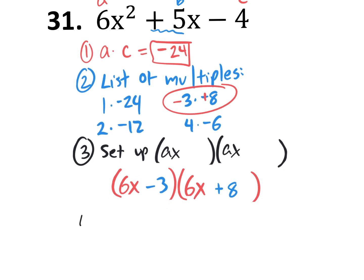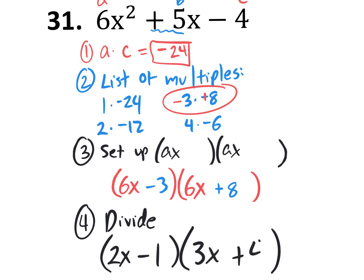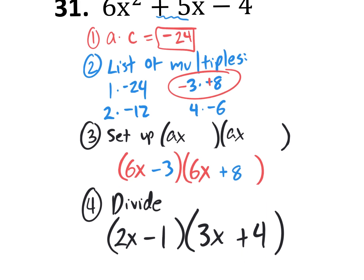So you put that minus 3 right there and the plus 8 right there. So that's our third step of the 4. And the fourth step is to simply divide. Divide by what? By whatever you can. The greatest value, that is. So when you look at this first parenthesis, the 6 and the 3, they're both divisible by 3. 6 divided by 3 is 2, and of course it has an X. 3 divided by 3 is 1. So it's a 2X minus 1. The second binomial, you can't divide both of them by 3, but you can divide both of them by 2.